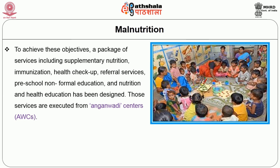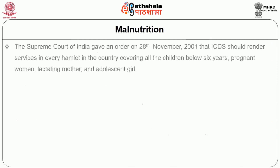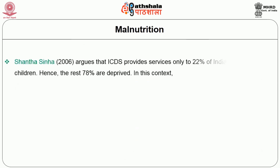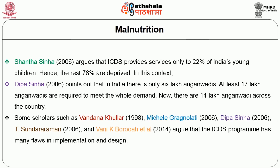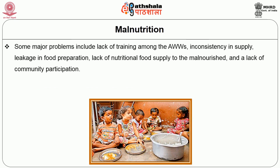These services are executed from Anganwadi centers, whose workers are provided with proper training and honorarium. It has been thought that the effects of this scheme would be larger if the services are rendered in an integrated manner. The Supreme Court of India gave an order on 28 November 2001 that ICDS should render services in every hamlet in the country, covering all children below 6 years, pregnant women, lactating mothers, and adolescent girls. However, Sinha argues that ICDS provides services to only 22% of India's young children, leaving 78% deprived. Deepa Sinha points out that India has only 6 lakh Anganwadis, whereas at least 17 lakh are required; now there are 14 lakh across the country. Many scholars argue that ICDS has many flaws in implementation and design, including lack of training among Anganwadi workers, inconsistency in supply, leakage in food production, lack of nutritional food supply to the malnourished, and lack of community participation.